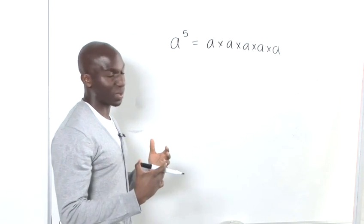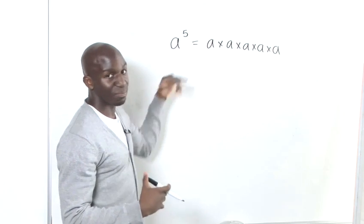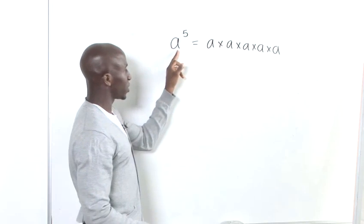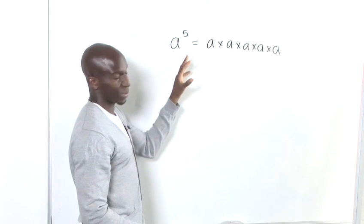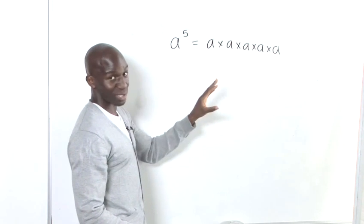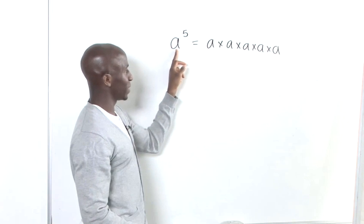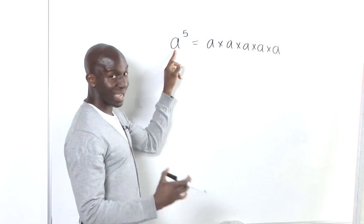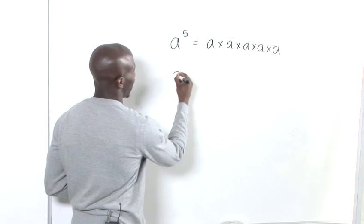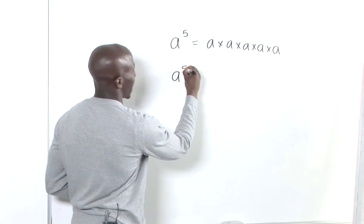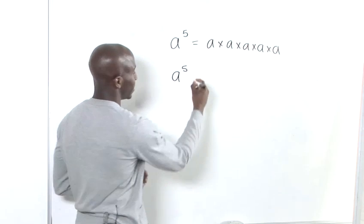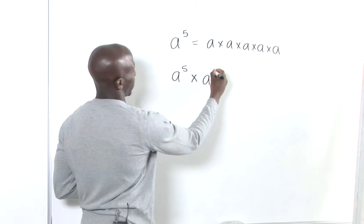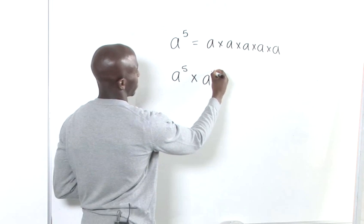So, what happens when we try to multiply a⁵ by another number? The first thing we need to know is that you can only multiply exponents directly when the bases are the same. The powers can be different, but the base — which is 'a' — has to be the same. So we can only multiply directly by 'a' with another power. We'll take a².